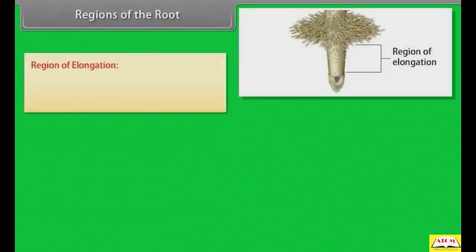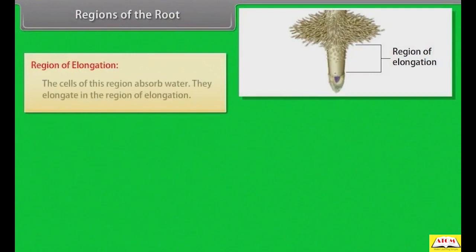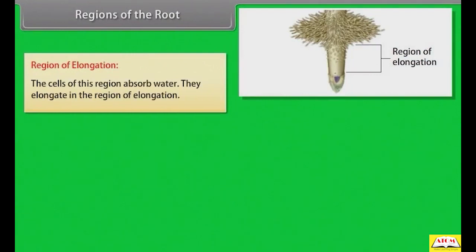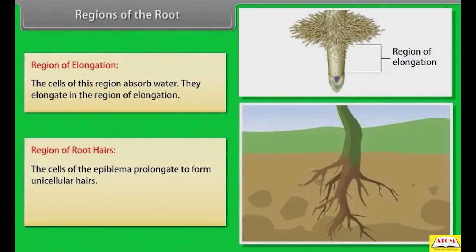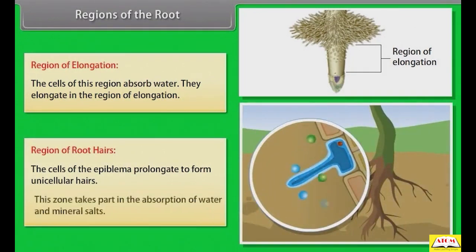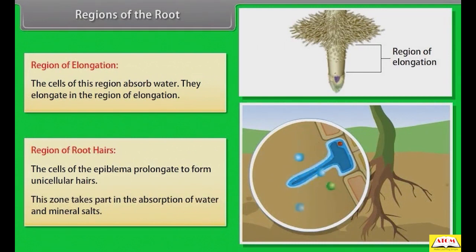The cells of the region of elongation absorb water and elongate. In the region of root hairs, the cells of the epiblemma elongate to form unicellular hairs. This zone takes part in the absorption of water and mineral salts.